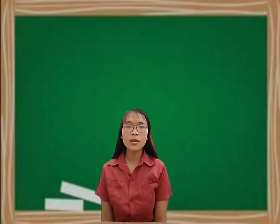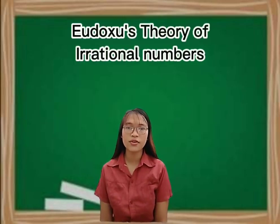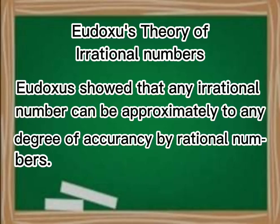For volume 10, it is all about Eudoxus' theory of irrational numbers. Eudoxus showed that any irrational number can be approximated to any degree of accuracy by rational numbers.